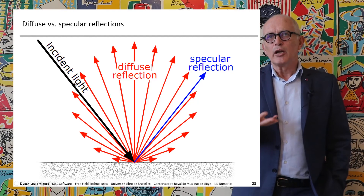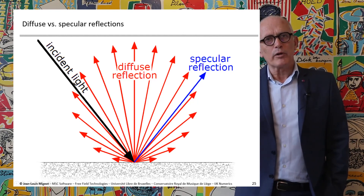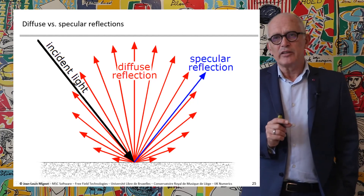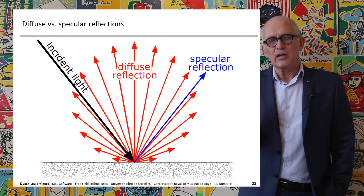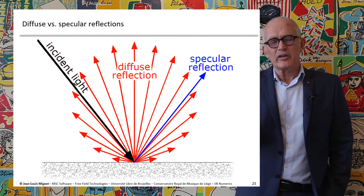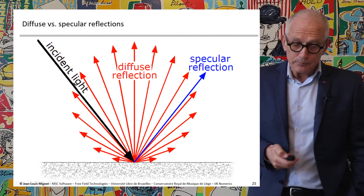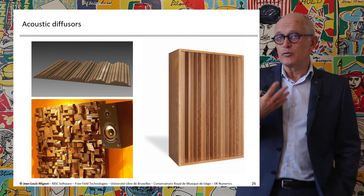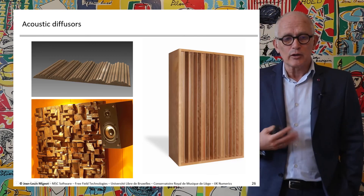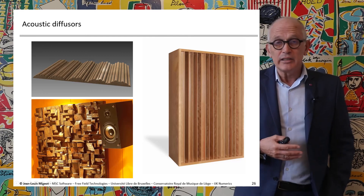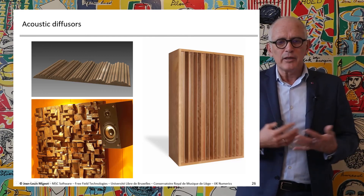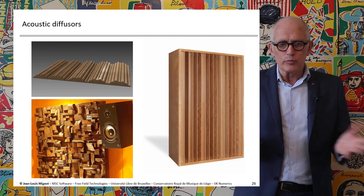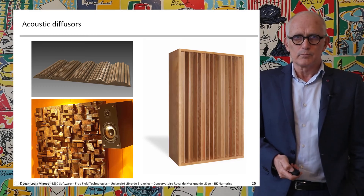Diffuse reflection is usually not important at low frequency but becomes more important as frequency increases, because as wavelength decreases it becomes comparable to the size of surface irregularities. Diffuse reflection is not physically undesirable — in fact it is something we actively seek, especially in room acoustics and concert hall acoustics. Diffusers placed on walls ensure that sound energy is distributed as widely as possible across the room.